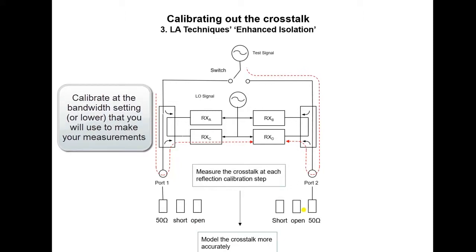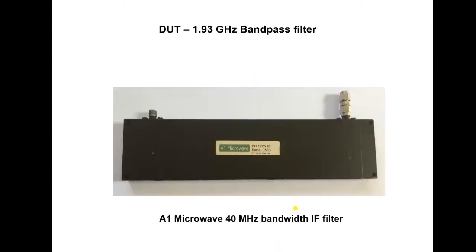What we are going to try to do is to measure the response of a satellite receiver IF bandpass filter. We have here a heavyweight IF filter. It is a device made by A1 Microwave Limited. It has a center frequency of 1.93 GHz, and a 40 MHz bandwidth. This device has extremely sharp response skirts, and very high out-of-band attenuation.